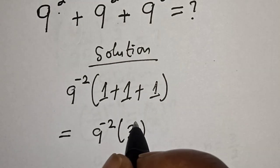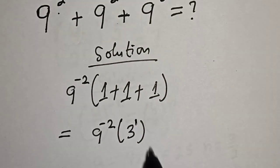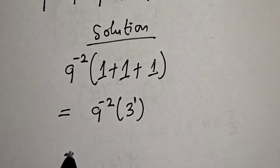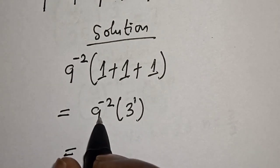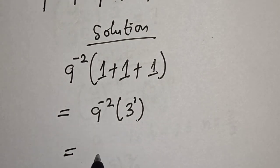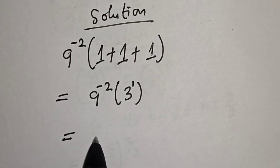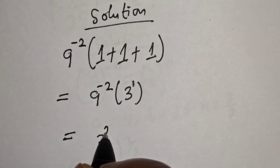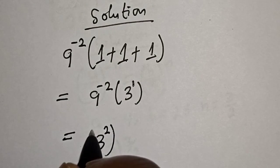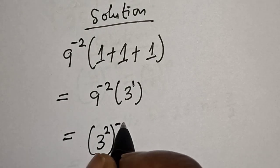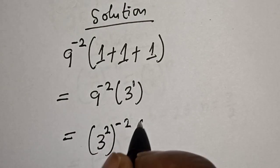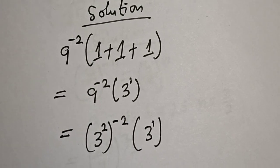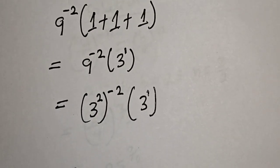This is equal to 9 raised to power minus 2, bracket 1 plus 1 plus 1, that is 3. And remember, this 3 is also 3 raised to power 1. So this is equal to 9 raised to power minus 2, multiplied by 3 raised to power 1.